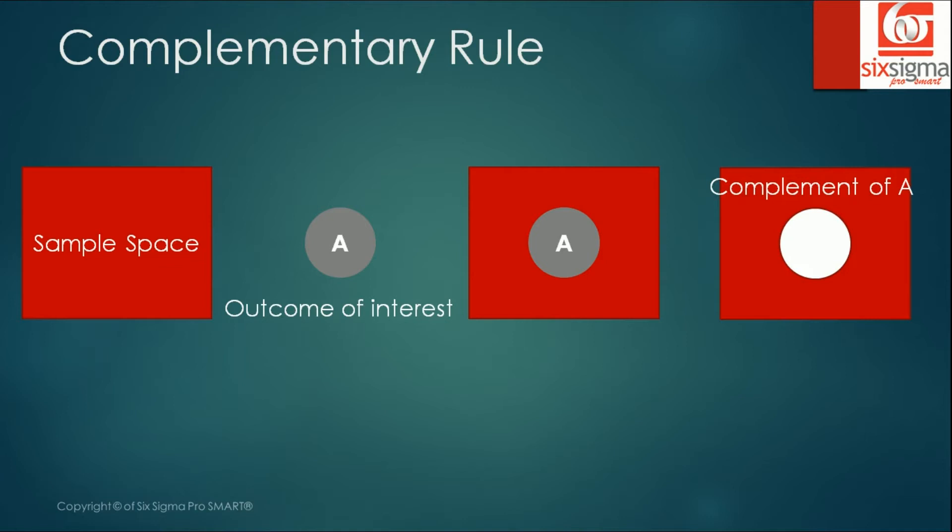What is the complement of A? Complement of A is nothing but you exclude the outcome of interest from the entire sample space and that leaves you with the complement of A. Put together, probability of an event A and what you see here is called A prime or the complement of A. P(A) and A prime put together is the hundred percent probability which equals to one. So P(A) equals one minus P(A prime) or complement of A.